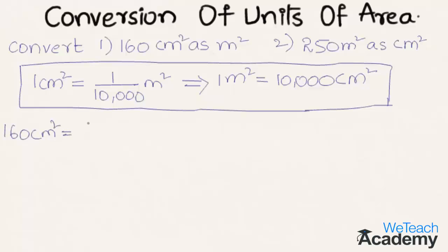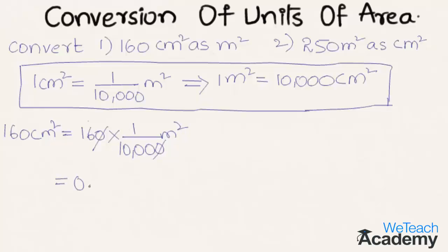To convert 160 centimeter square into meter square, we multiply 160 by one by ten thousand meter square. By canceling zeros in the numerator and denominator, we get sixteen divided by thousand, which is equal to 0.016 meters square.